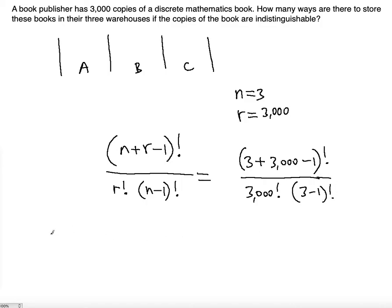Simplifying this we will get 3002 factorial divided by 3,000 factorial multiplied by 2 factorial. This means we will have 3002 times 3001 times 3,000 factorial divided by 3,000 factorial multiplied by 2 factorial.